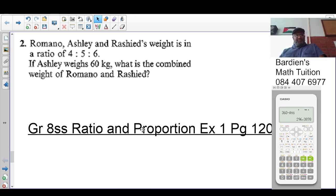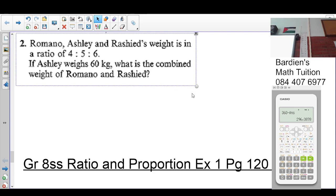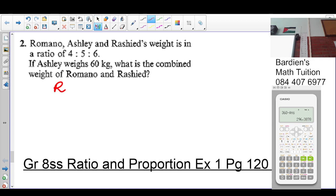Number two. Here we are told that Romano, Ashley and Rashid's weight is in the ratio of 4 is to 5 is to 6. So we start by saying Romano is to Ashley is to Rashid, which is 4 is to 5 is to 6.